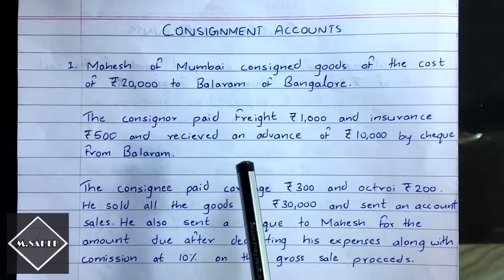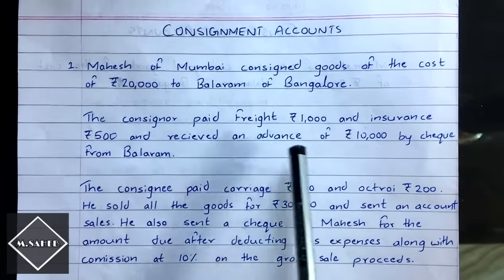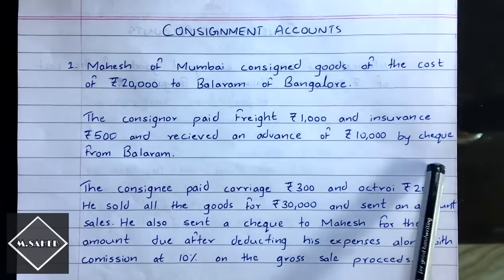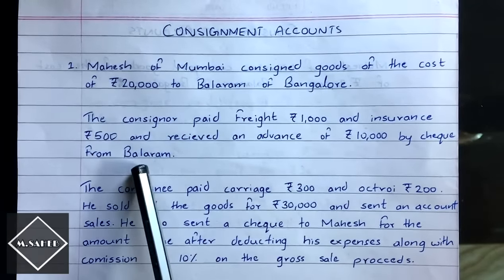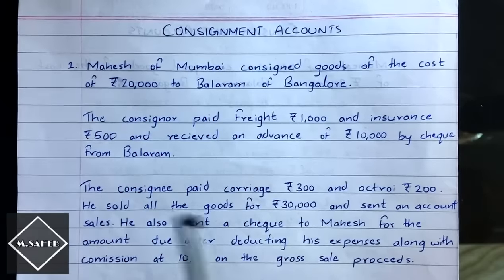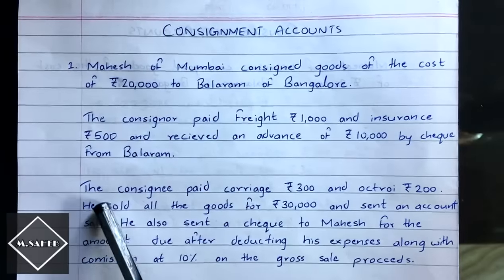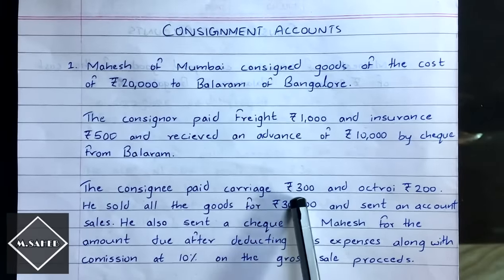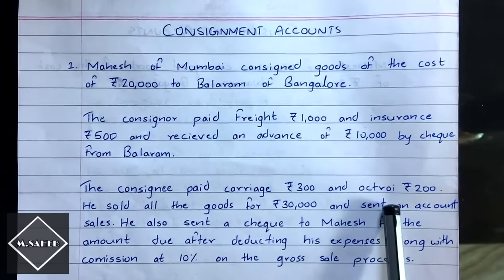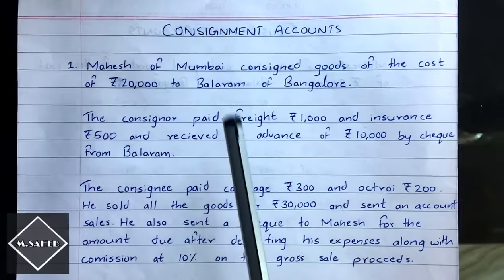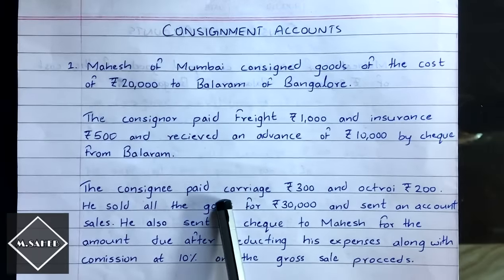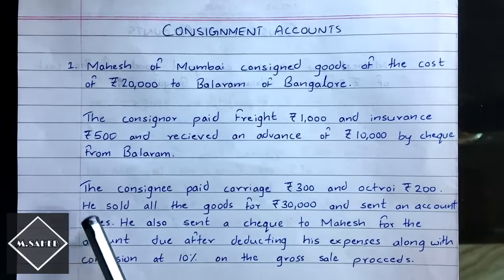Mahesh received an advance of rupees 10,000 by cheque from Balaram. The consignee paid carriage of rupees 300 and octroi of rupees 200, so Balaram also incurred some expenses to receive the goods.